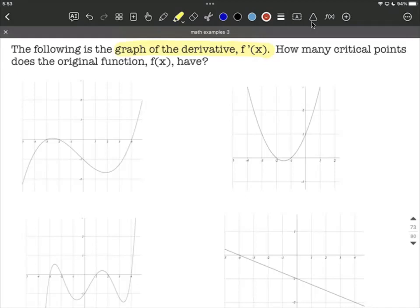Remember, each and every one of these we are given the derivative's graph, and asked about how many critical points does the original function have. Now, a critical point is either going to occur whenever the derivative is equal to zero, or it's undefined.